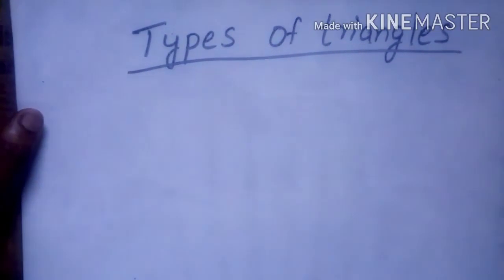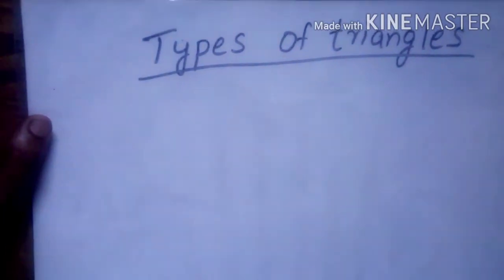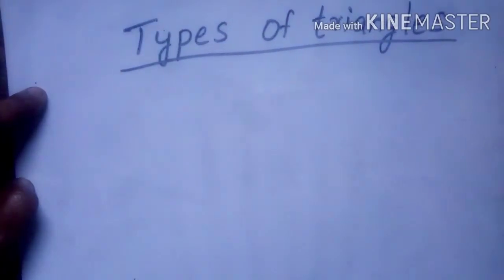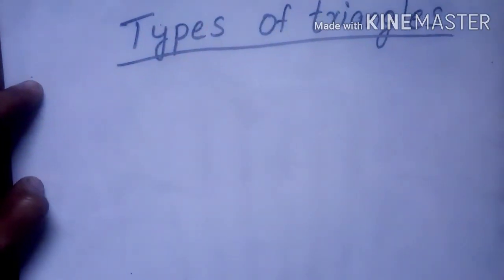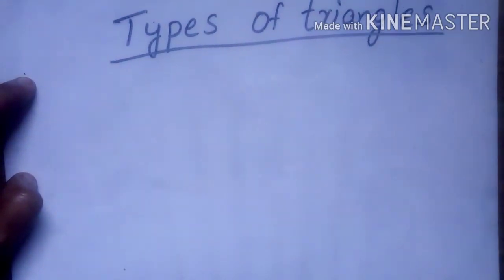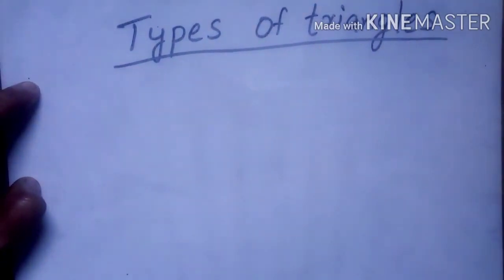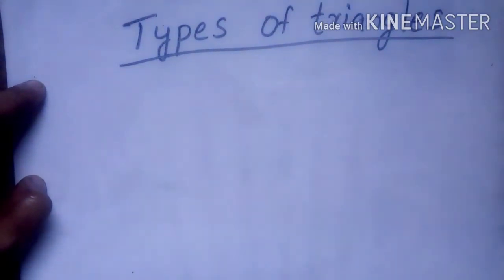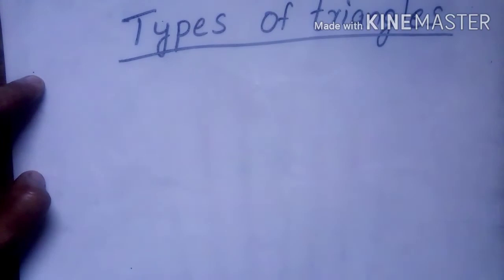Next is types of triangles. Triangles can be divided into two ways: according to the measure of their sides and angles. On the basis of the measure of their sides, triangles are of three types: equilateral triangle, isosceles triangle, and scalene triangle.